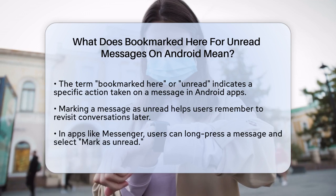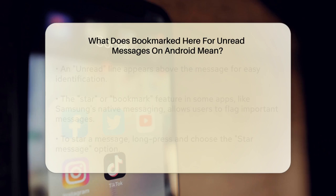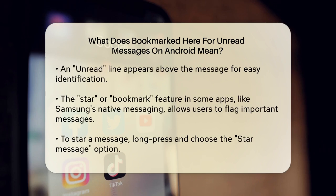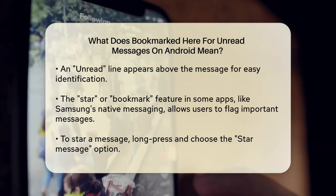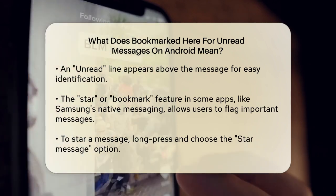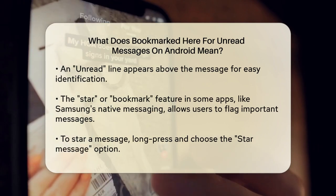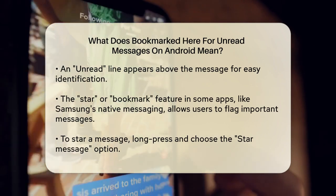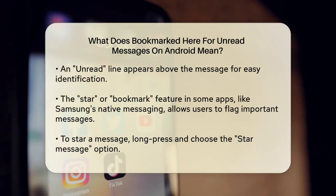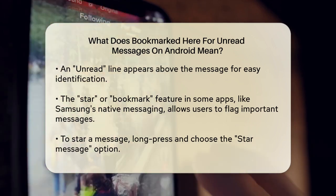In apps like Messenger or Google Chat, you can mark a message as unread. This is useful if you need to come back to a conversation later but do not want to forget about it. For example, in Messenger you can mark a message as unread by long pressing on the message and selecting the 'Mark as Unread' option. This will add an unread line above the message, making it easy to find later.